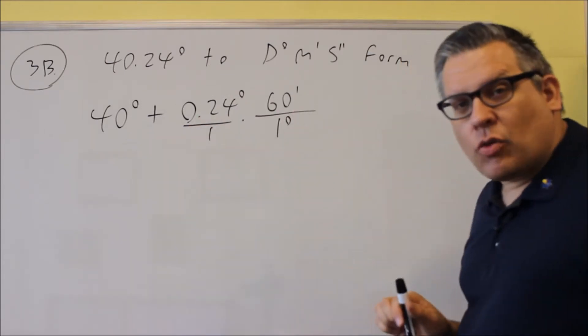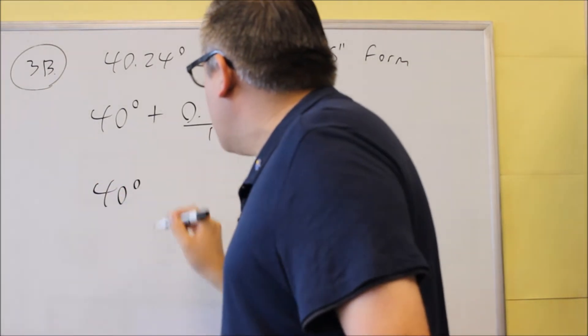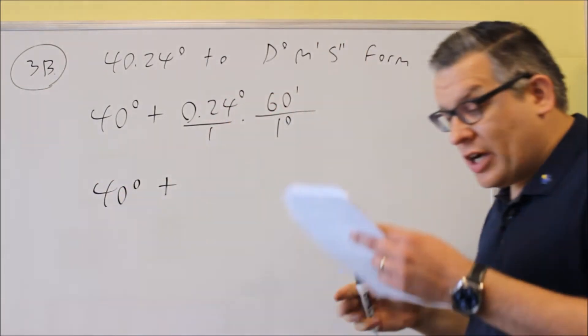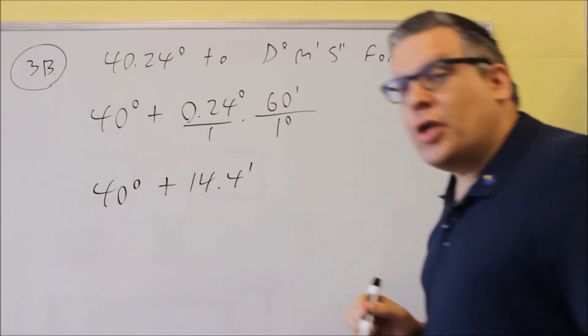Those 40, we're just going to leave it the way it is, and then we're going to multiply this together. That's going to give you 40 degrees plus, and when we multiply this together, it's going to give us 14.4 minutes.